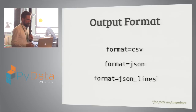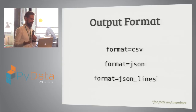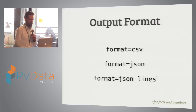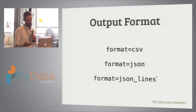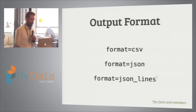More output formats were added: CSV, JSON, and JSON Lines — which is line-delimited JSON — for the facts and members, and also for aggregation. JSON Lines for aggregation is not there yet but will be added.